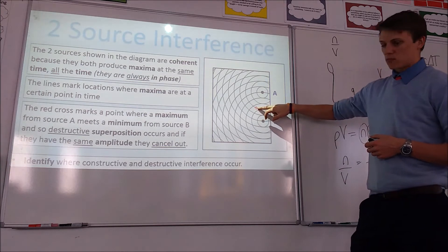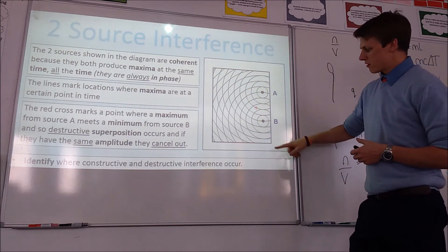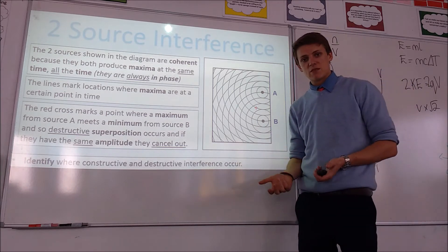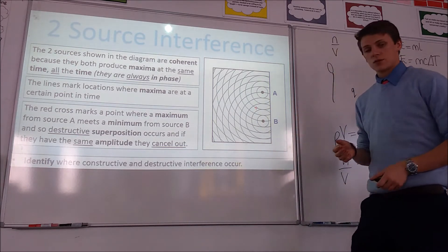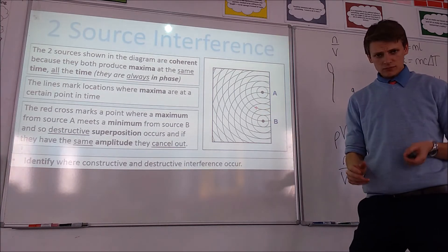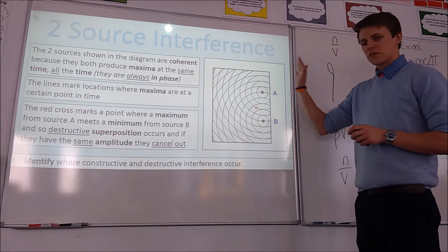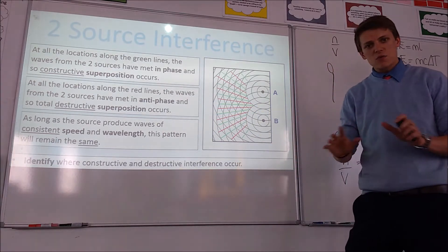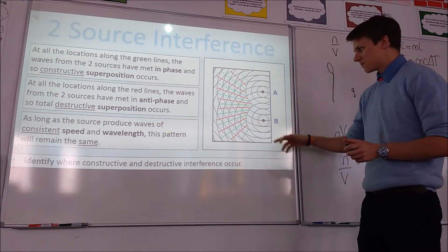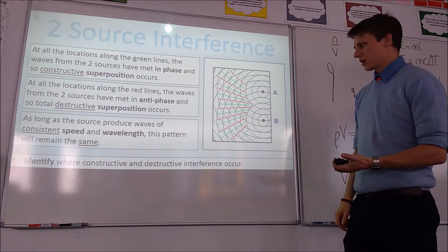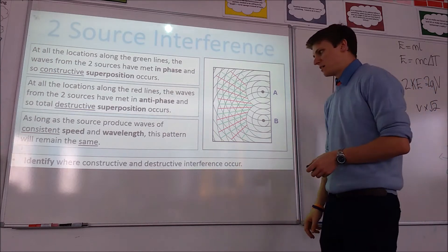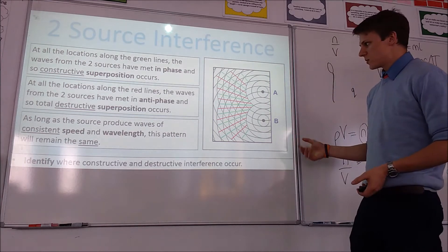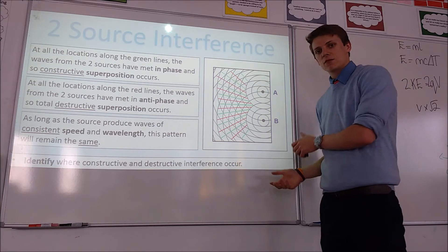If we look at this red point, from source A that's at a maximum, but from source B that's halfway between two maxima, so that's a minimum. A maximum meets a minimum, so they completely cancel each other out — we get destructive superposition at that location. Going through this process for all positions builds up a picture where the green lines represent constructive superposition and the red lines represent destructive superposition. If we keep the sources at the same frequency and speed, this pattern will be the same every single time.